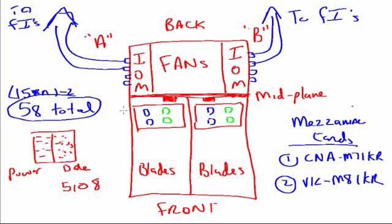Looking at that, if I configure one adapter to go to fabric A and another to go to fabric B, it's going to be the same distance because the midplane equally connects all blades and all components in the chassis. So whether I'm telling that VNIC to go out via my service profile to fabric A or fabric B, it doesn't really matter. Whether we have blades in slots one, three, five, and seven, or slots two, four, six, and eight, they can go out of either fabric A or B's IOM port and be equally distant to the LAN and SAN clouds.